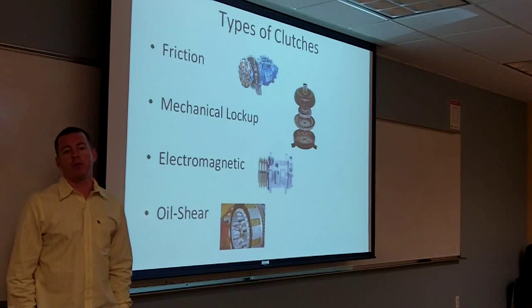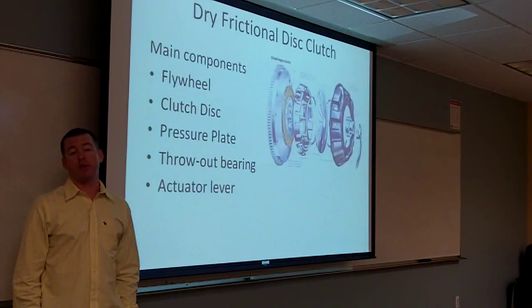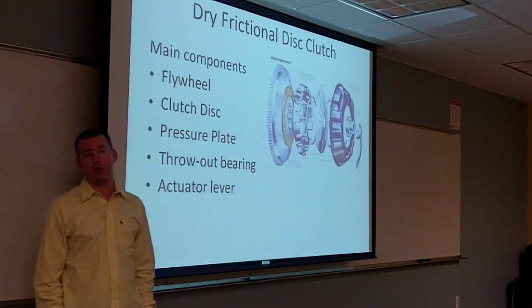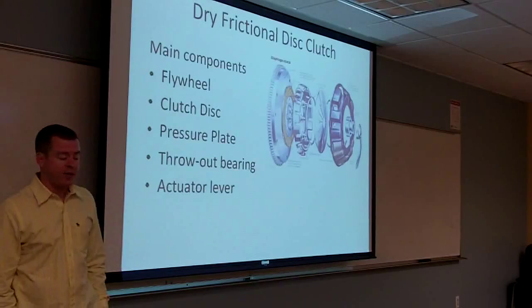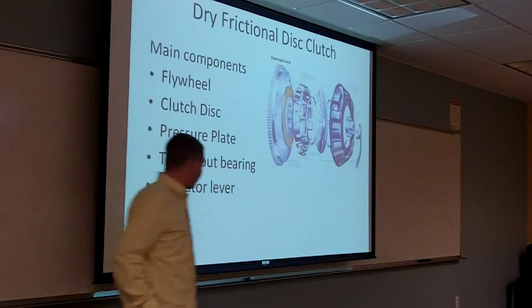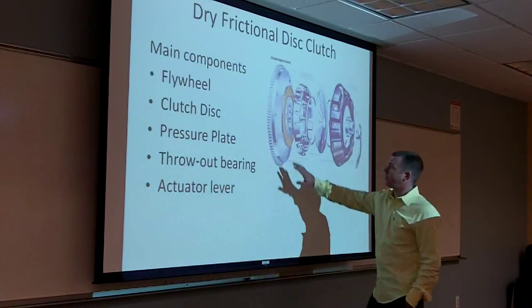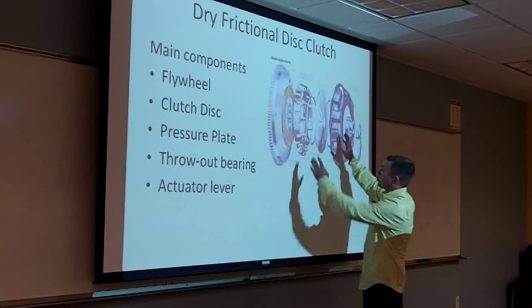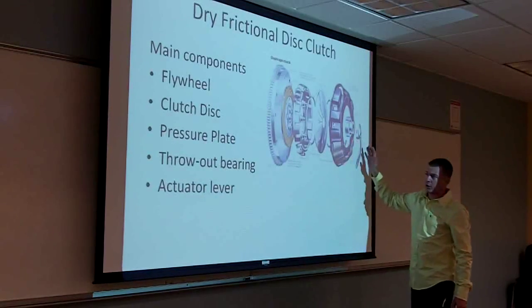One of the most common designs is the dry frictional disc clutch design because of its low cost to use and low cost to maintain. There are five main components to this clutch design: the flywheel, the clutch disc, the pressure plate, the throwout bearing, and the actuator lever.